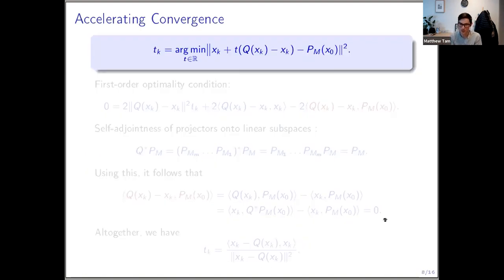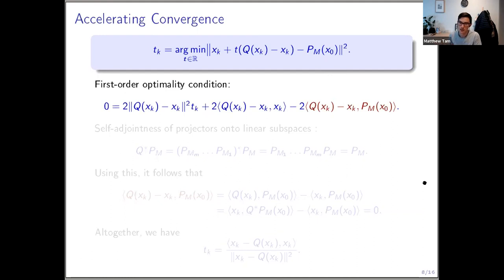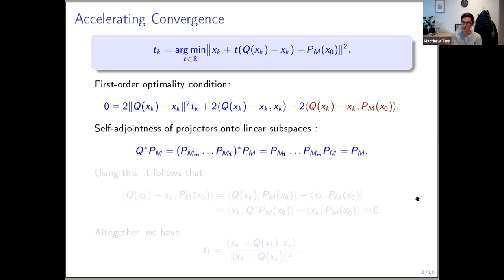Let's look at the linear subspace setting — not the affine setting. This is essentially Gearhart and Kirsch's result. The step size rule is a quadratic in t when you expand the norm. Since it's convex, you look at the first-order optimality condition. This leads to an equation that t_k must satisfy, which looks good except for a red term involving P_M evaluated at x-naught — the point we're trying to find — so we can't use this formula directly.